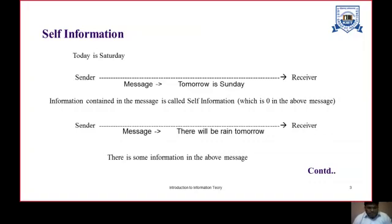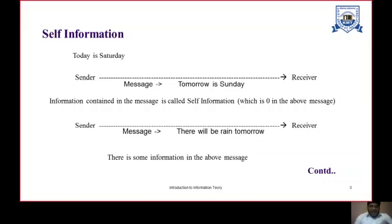Now let's understand self-information with one example. Suppose there is one sender and one receiver, and the sender is sending a message to the receiver that tomorrow is a Sunday. If today is a Saturday, it is already known to the receiver that if today is Saturday, then tomorrow definitely will be a Sunday. So there will not be any kind of information for the receiver in this particular message. The self-information in this message is zero for the receiver.